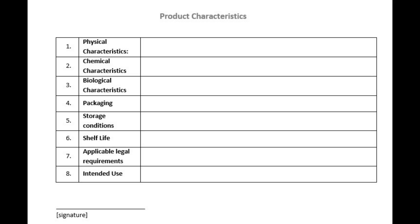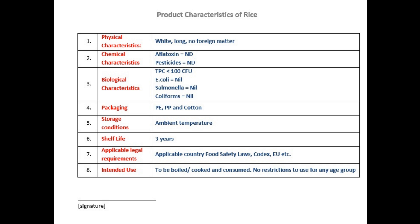The food safety team will develop a full description of the product including all relevant information on product safety such as physical, chemical, and microbial parameters; packaging; labeling requirements; shelf life; conditions for storage; method of transportation and distribution; and legal requirements for food safety of the product. You can now see a filled product description for a rice processing industry.